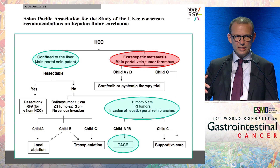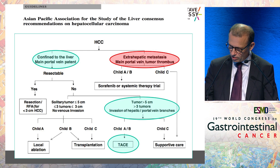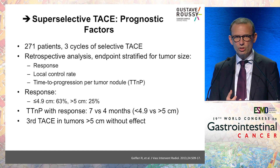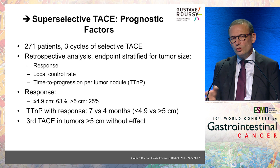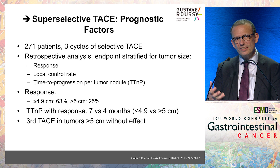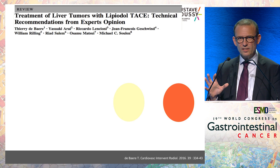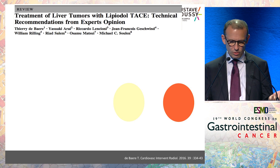Looking at other guidelines around the world — Asian Pacific recommendations show exactly the same pattern: this is a good candidate for TACE. The Hong Kong Liver Cancer staging system agrees. There may be slightly too many lesions, but this is a good candidate for locoregional treatment. We are now doing TACE better with super-selective TACE, which improves results and decreases toxicity.